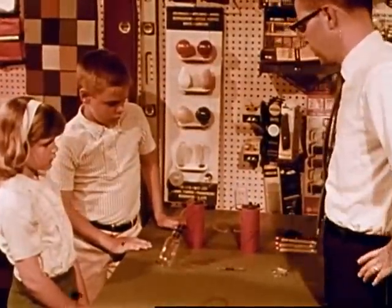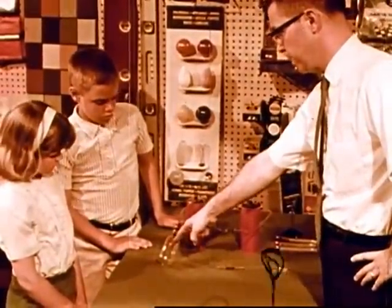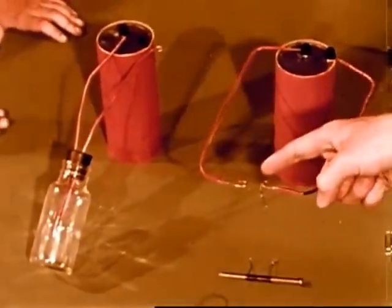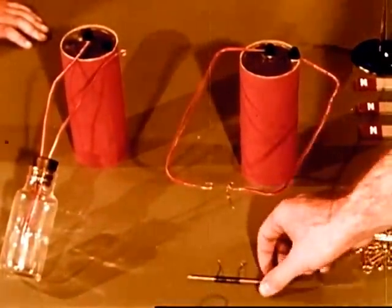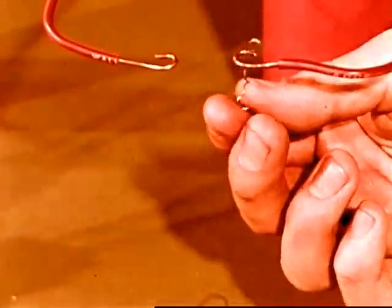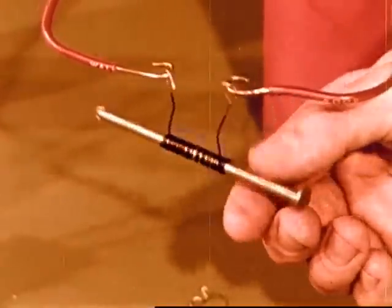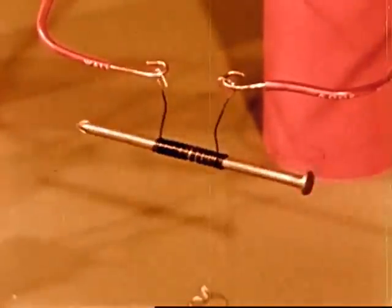Mr. Grant tells Frank and Joan that so far they've seen that electricity can make light and that it can make heat. Now Mr. Grant is going to try something else. He's wound some wire around a nail. In place of the wire that produced heat, he's connecting the wire wrapped around the nail.